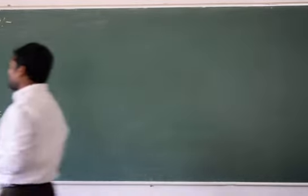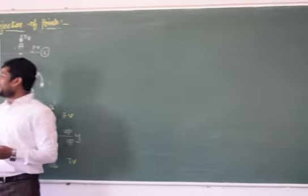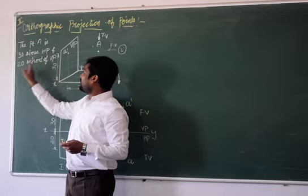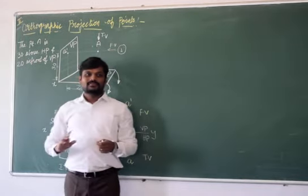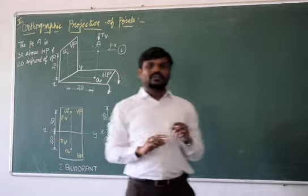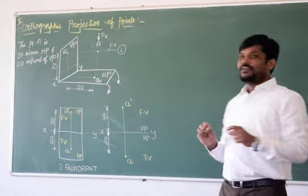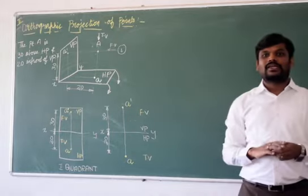Let's take an example problem. Already written here, the point A is 30 mm above HP and 20 mm above VP. The question here is, the point is 30 mm above HP and 20 mm above VP. Draw the projections of point A.